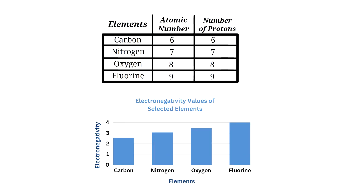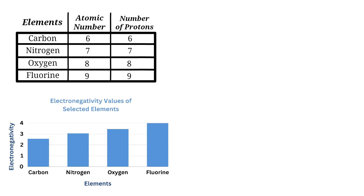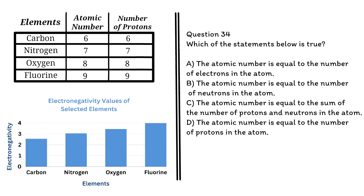The table and the corresponding graph display various properties of selected elements. The table lists the atomic number and number of protons of each element, while the graph displays the electronegativity values of the elements. Use these to answer the following questions. Question 34: Which of the statements below is true?